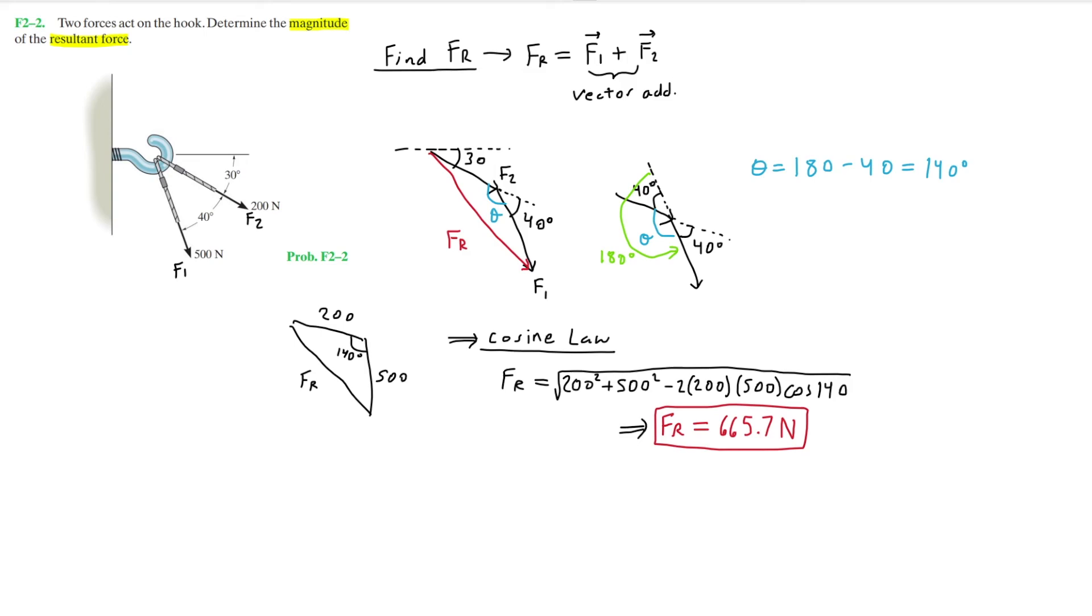And it's also important to remember when to use the cosine law and when to use the sine law to help you find the resultant force like we did here. In this case, we simply use the cosine law, given the triangle we formed and the angle we found. However, some cases can be a little bit more complex. Like in the last video, I believe we implemented both the cosine law and the sine law.